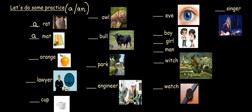Orange starts with a vowel. And that is o, so it's going to be an orange. Lawyer starts with the consonant l. Therefore, it's a lawyer. Cup starts with a consonant c. Therefore, it's a cup.